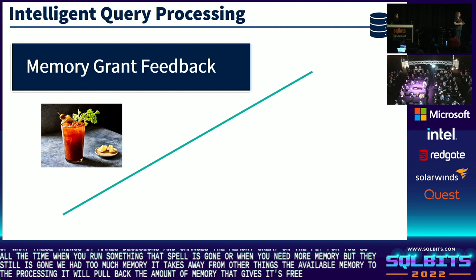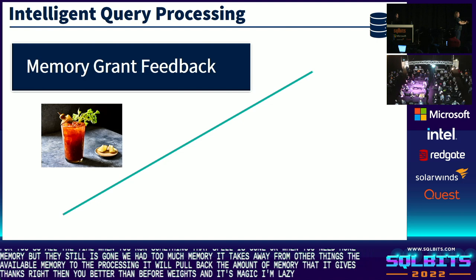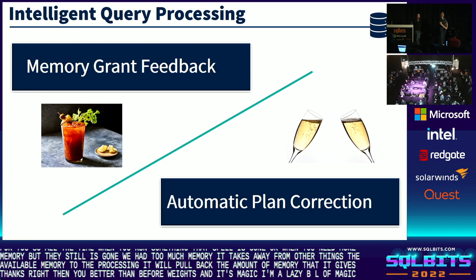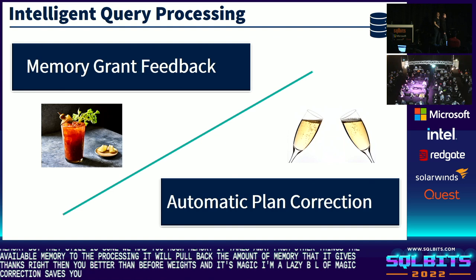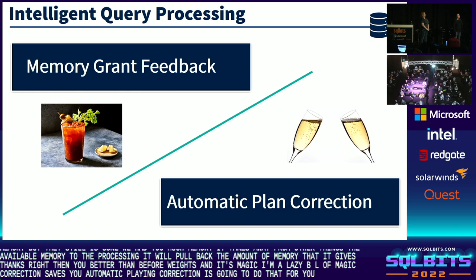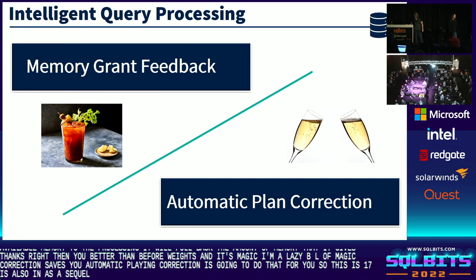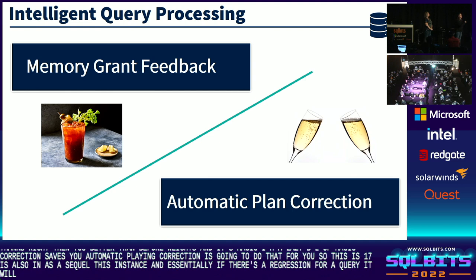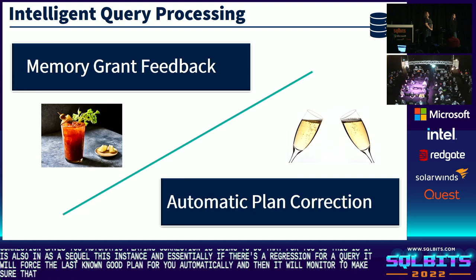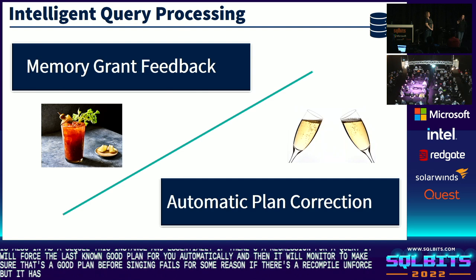I'm a lazy DBA. I love magic. Automatic plan correction also saves you time. This is built on top of Query Store. Rather than having to go in and find plans that are problematic or find queries with multiple plans or regressions, automatic plan correction does that for you. Introduced in SQL Server 2017, also in Azure SQL and Managed Instance. If there's a regression for a query, it will force the last known good plan automatically and monitor to make sure that's a good plan. If forcing fails due to a recompile, it will re-enforce. It happens like magic in the background, and there are DMVs where you can see what things were automatically planned.